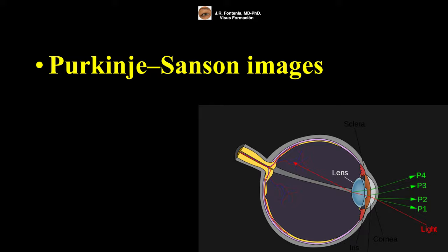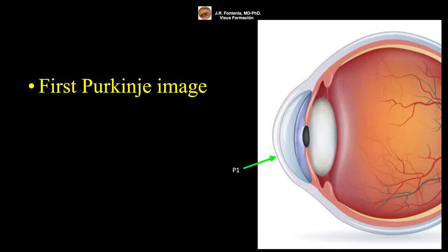The first Purkinje image is the reflection from the outer surface of the cornea.